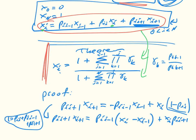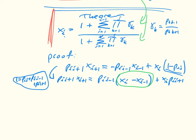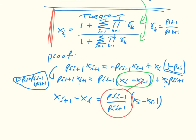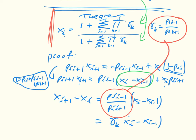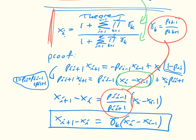Now we isolate the differences and get them in a nicer expression. We have that X(i+1) minus X_i, with that common factor, is equal to P(i, i-1) over P(i, i+1) times (X_i minus X(i-1)). But that ratio is just gamma_i. So X(i+1) minus X_i equals gamma_i times (X_i minus X(i-1)). We've essentially done the harder part of the work.